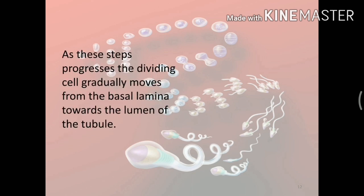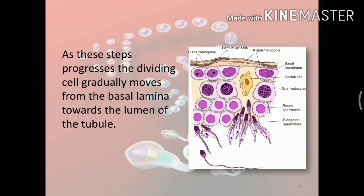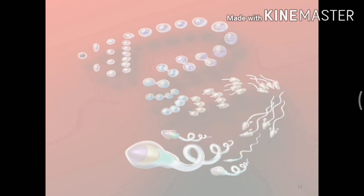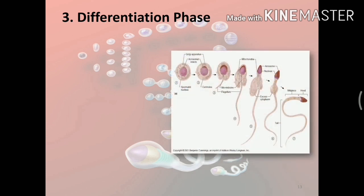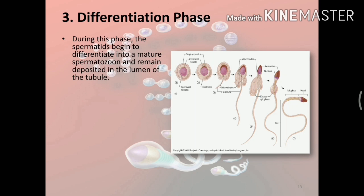At the end of meiosis 2, as this step progresses, the dividing cell gradually moves from the basal lamina towards the lumen of the tubule. Lastly, the differentiation phase — during this phase, the spermatids begin to differentiate into a mature spermatozoa and remain deposited in the lumen of the tubule.